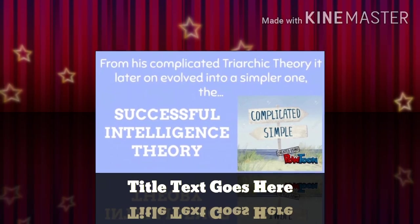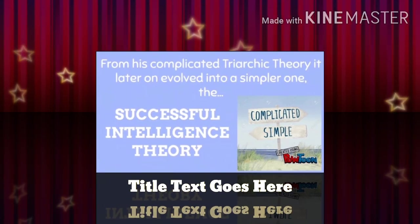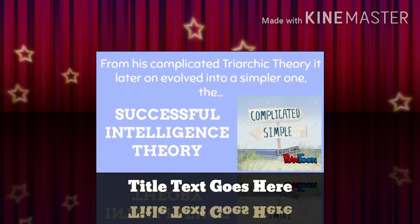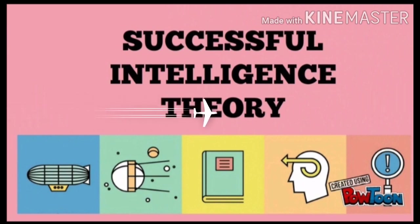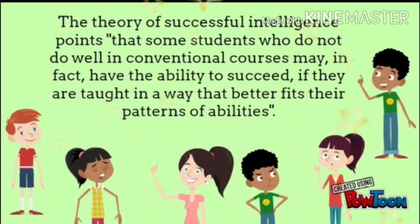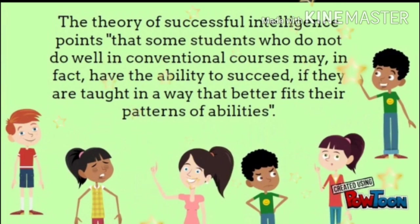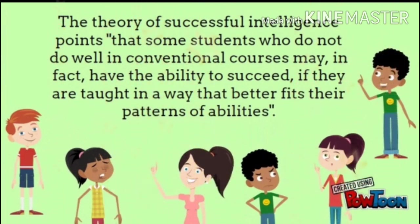From his complicated triarchic theory, it later on evolved into a simpler one: the Successful Intelligence Theory. The theory of successful intelligence points out that some students who do not do well in conventional courses may, in fact, have the ability to succeed if they are taught in a way that better fits their patterns of abilities.